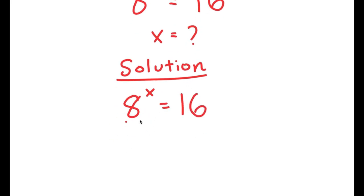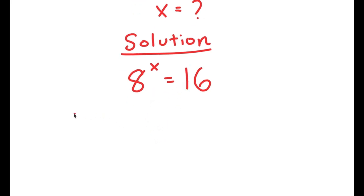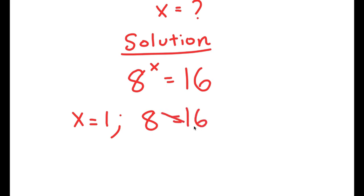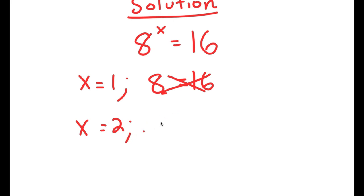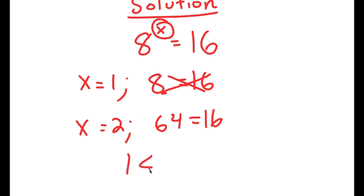Before we start, let's inspect this problem. If I plug in x equals 1, I get 8 to the power of 1 equals 16, which gives 8 equals 16 — false. If I plug in x equals 2, I get 8 squared equals 64, so 64 equals 16. Notice the big gap between 8 and 64, so x is not a whole number but a decimal somewhere between 1 and 2.